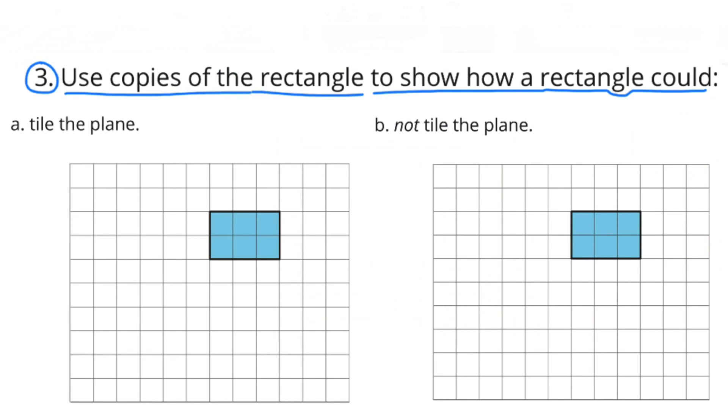Number 3. Use copies of the rectangle to show how a rectangle could: a, tile the plane; b, not tile the plane.